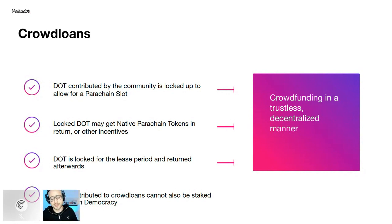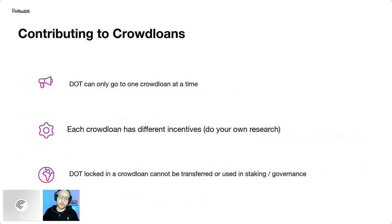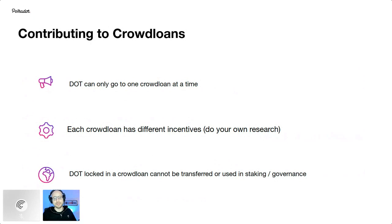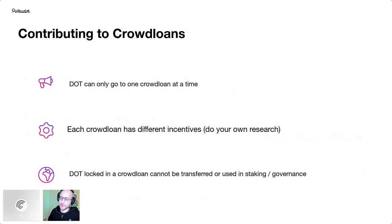The caveat is that the DOT you contribute can't be staked or used in governance while it's locked. You can only contribute your DOT to one crowd loan at a time — you can't contribute the same DOT to multiple different things. It's important to do your own research into these different projects — see what's interesting, whether the teams are legit, and what the use cases actually are.